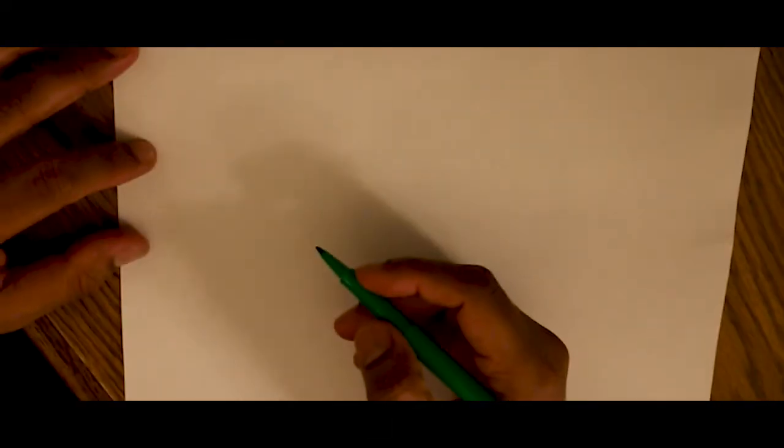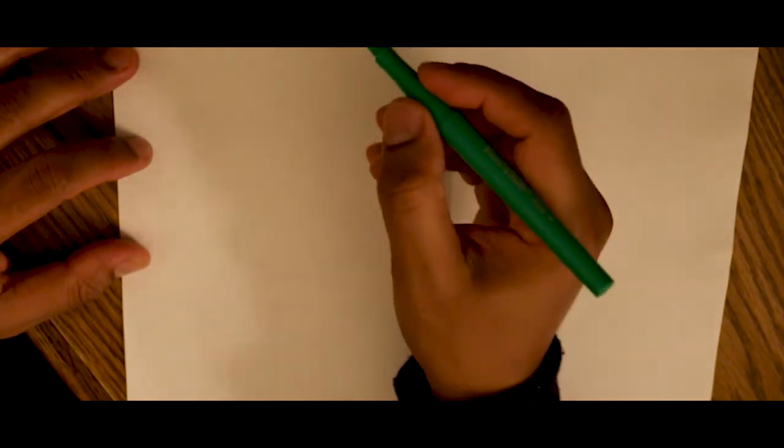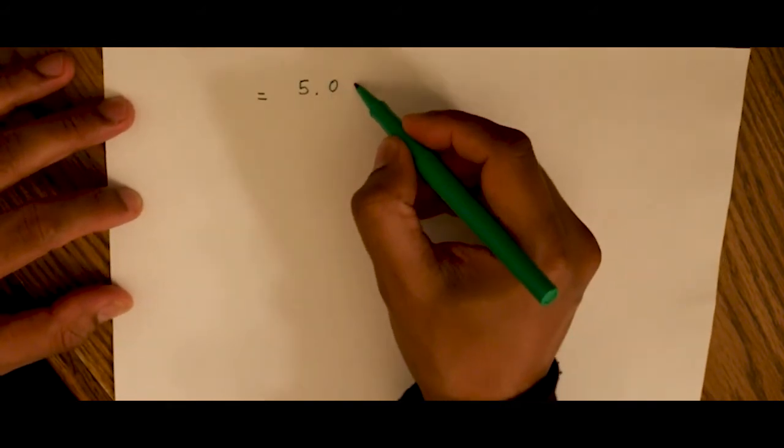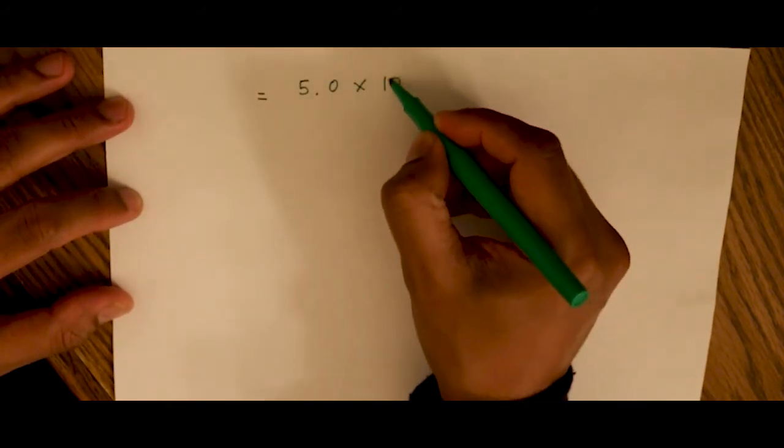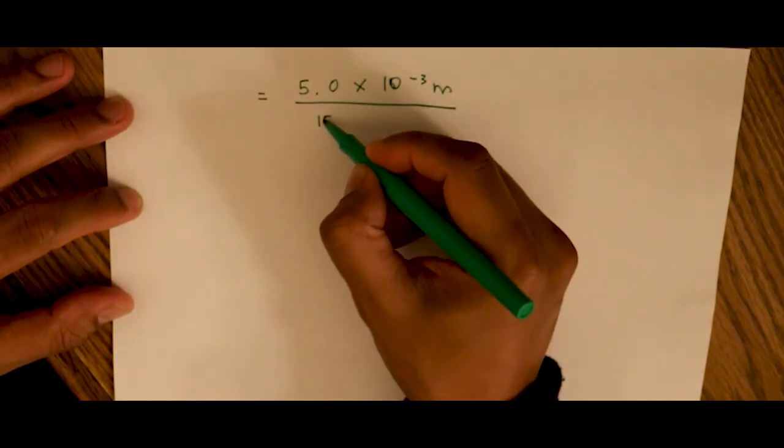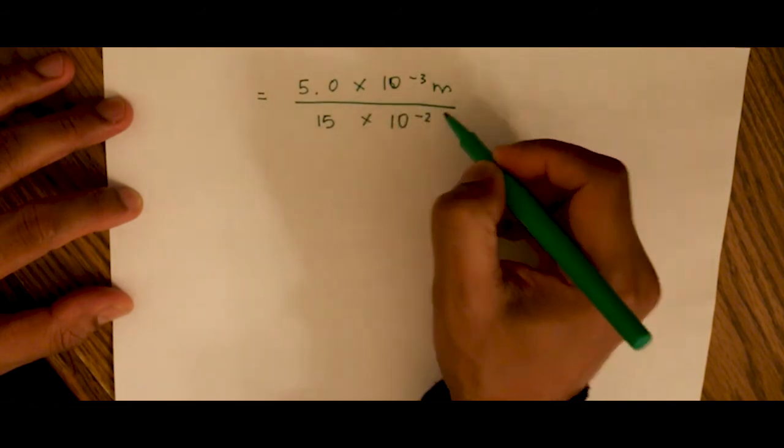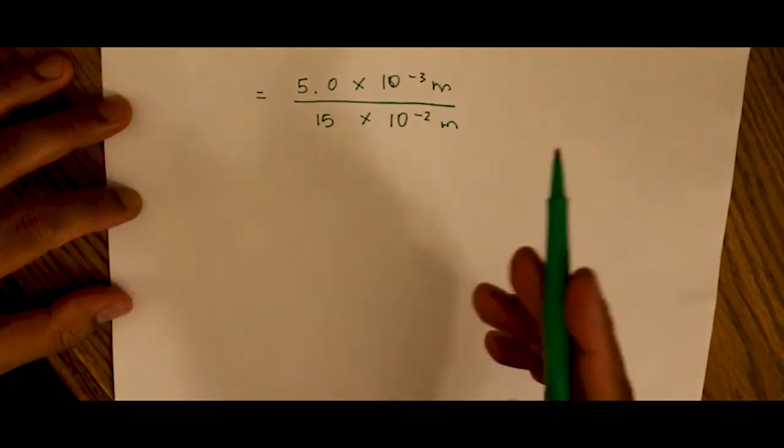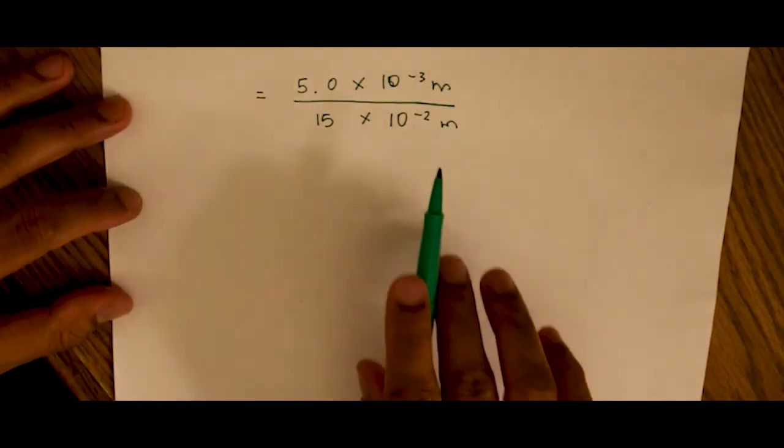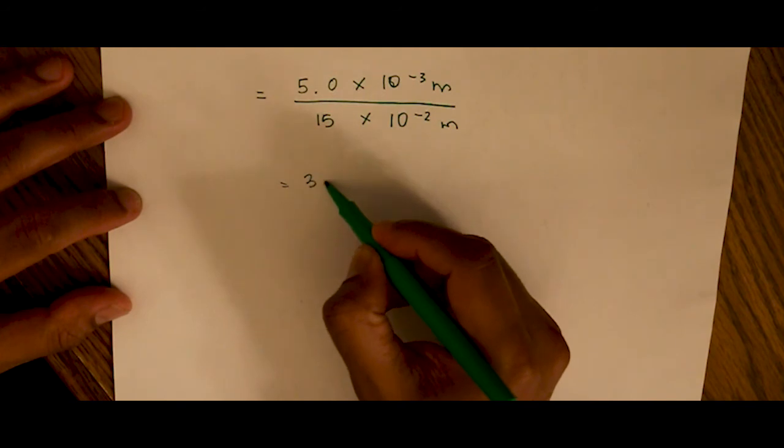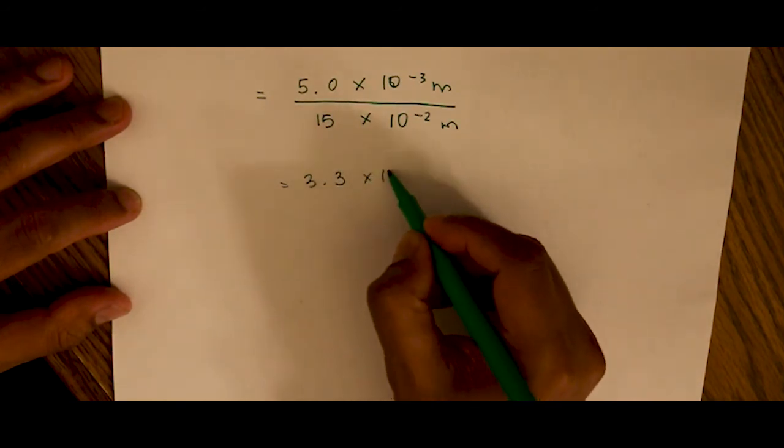Now if we want to find out what fraction of the tendon's length that corresponds to, we just take our value that we found out that was approximately 5 times 10 to the negative 3 meters, that's the length of the stretch, over the length of the tendon which is 15 times 10 to the negative 2 meters or 0.15 meters or 15 centimeters. So we end up with a value of 3.3 times 10 to the negative 2.